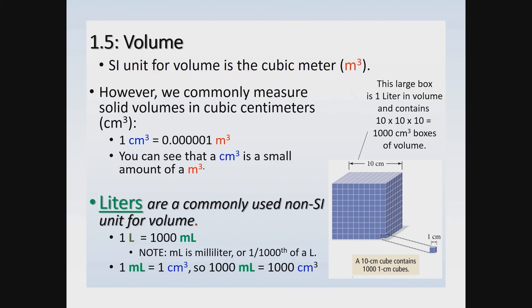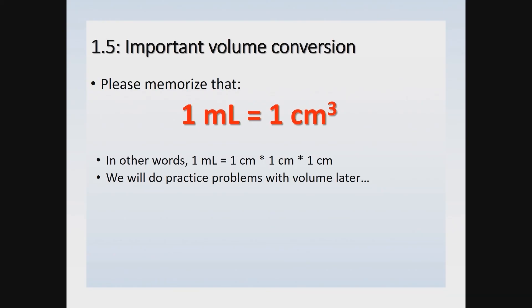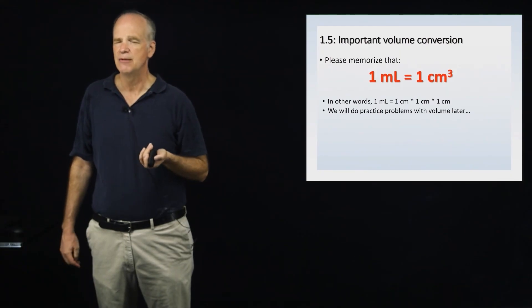Think of one cm³ as a small volume about the size of a sugar cube. If you take a thousand of those sugar-cube-sized volumes, you have one thousand cm³ — which equals one liter. Visually, that's a box with ten centimeters in each direction: ten out in length, ten in width, ten in height, giving 1,000 cm³ or one liter. Please memorize that one milliliter equals one centimeter cubed — this is extremely important and will be applied in many problems.